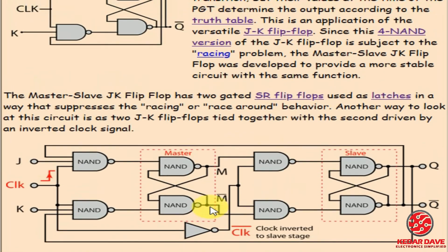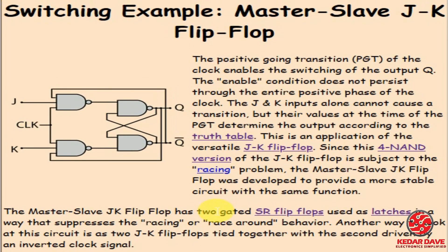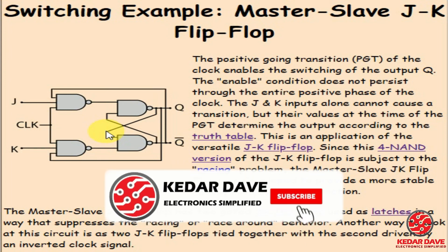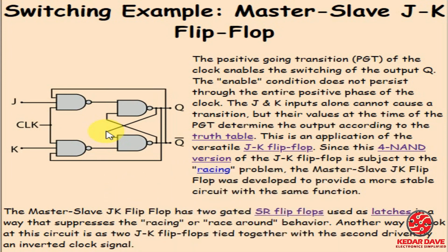The JK flip-flop is the basic structure, and from that we derive the master-slave JK flip-flop. They do not have much difference, but the master-slave version uses two SR latches to remove the race around condition. That is the concept of the JK and master-slave JK flip-flop. If you gained some knowledge from this video, please like, share, and subscribe to the channel for more videos. Thank you for watching.